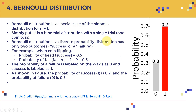The Bernoulli distribution is a discrete probability distribution with only two outcomes: success or failure. For a coin toss, the probability of heads (success) is 0.5 and the probability of tails (failure) is one minus p, also 0.5. On the x-axis, failure is labeled zero and success is labeled one. The probabilities of both outcomes must sum to one — for example, 0.3 failure and 0.7 success.